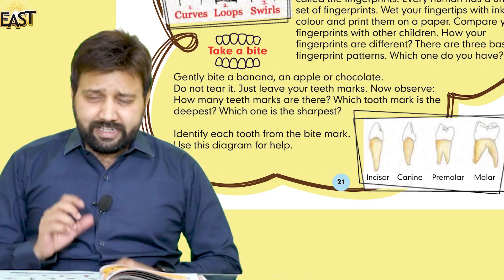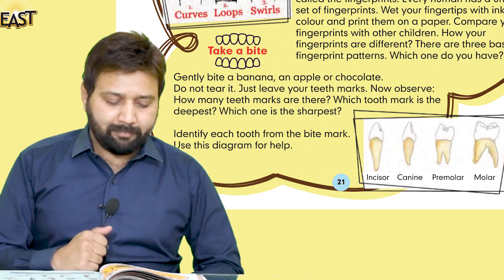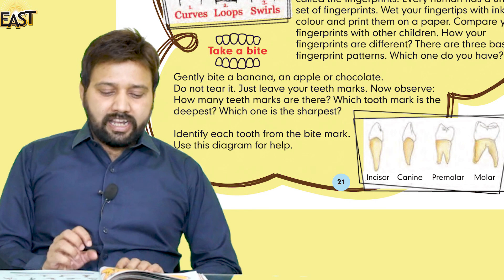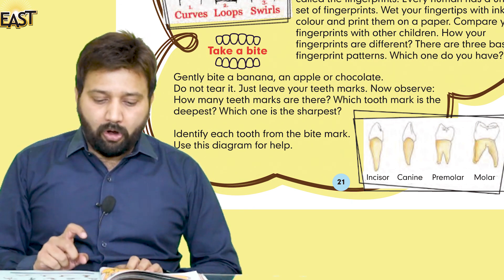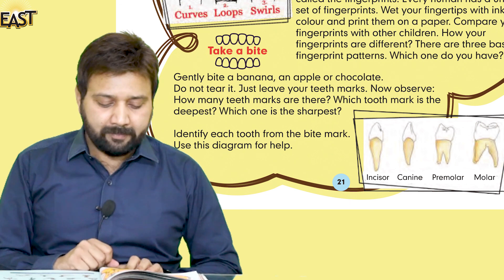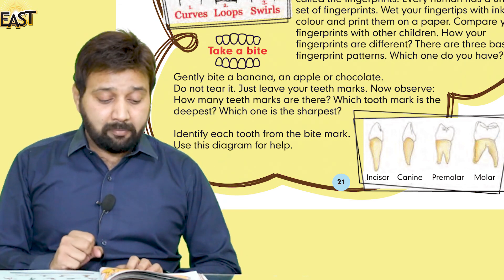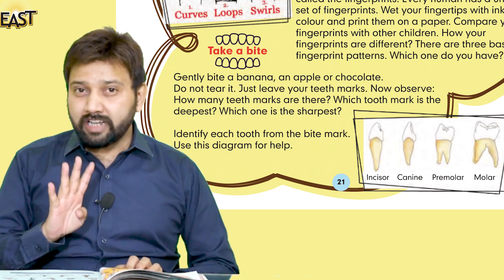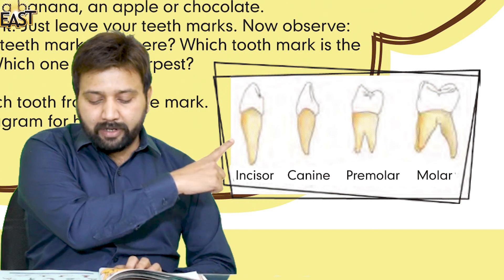اب ہم teeth کے بارے میں activity explore کرنے جا رہے ہیں. So gently bite a banana, apple, or chocolate — جو بھی آپ کے پاس easily available ہو. آپ نے کیا کرنا ہے — gently bite کرنا ہے، پورا کاٹنا نہیں ہے. Do not tear it — just leave your teeth marks. Now observe how many teeth marks are there, which tooth mark is the deepest، اور which one is the sharpest — جیسا کہ آپ نے lesson میں پڑھا تھا ہمارے teeth چار type کے ہیں۔